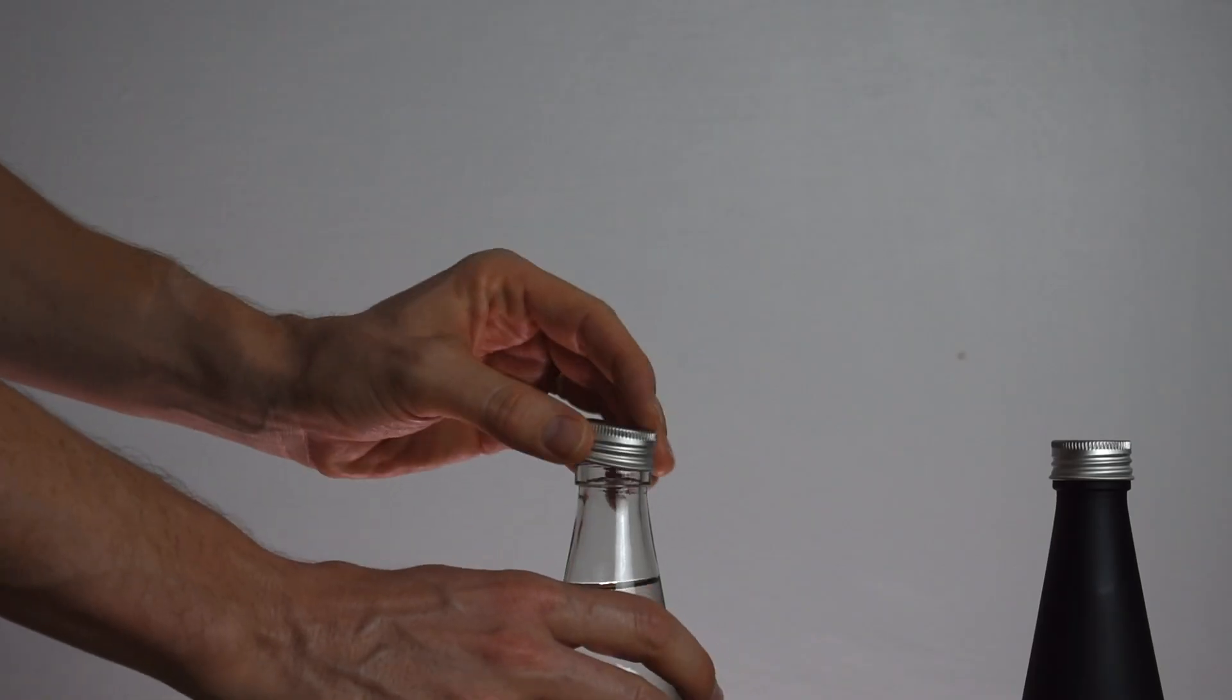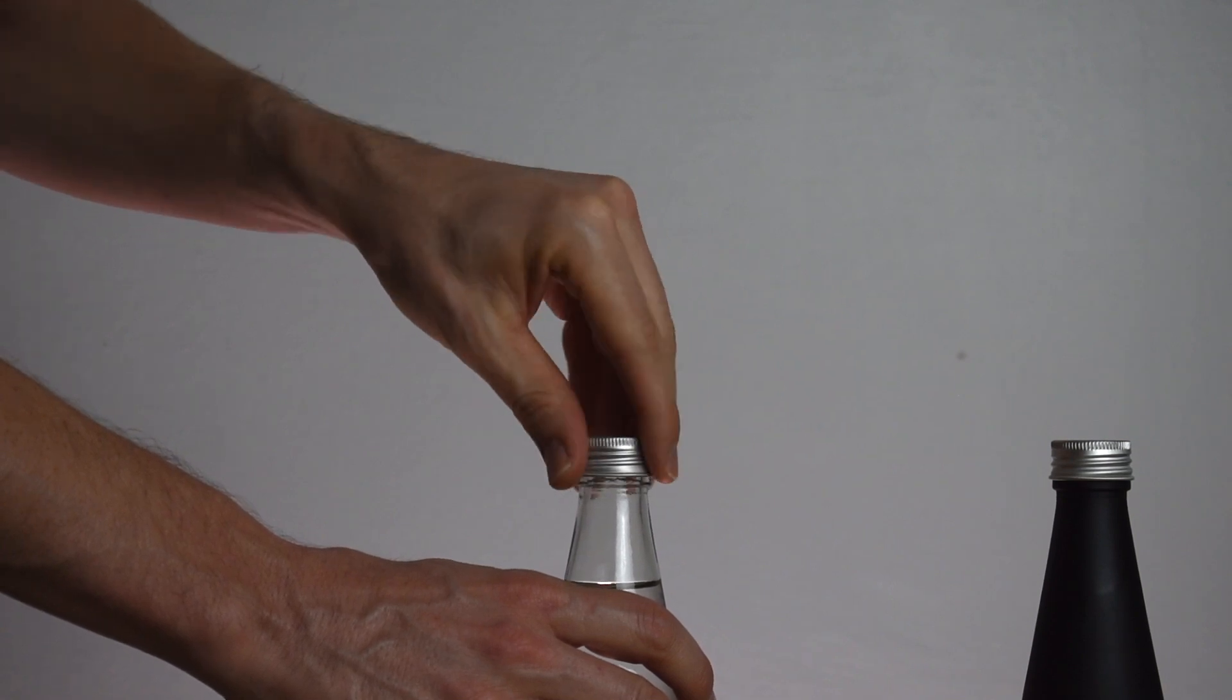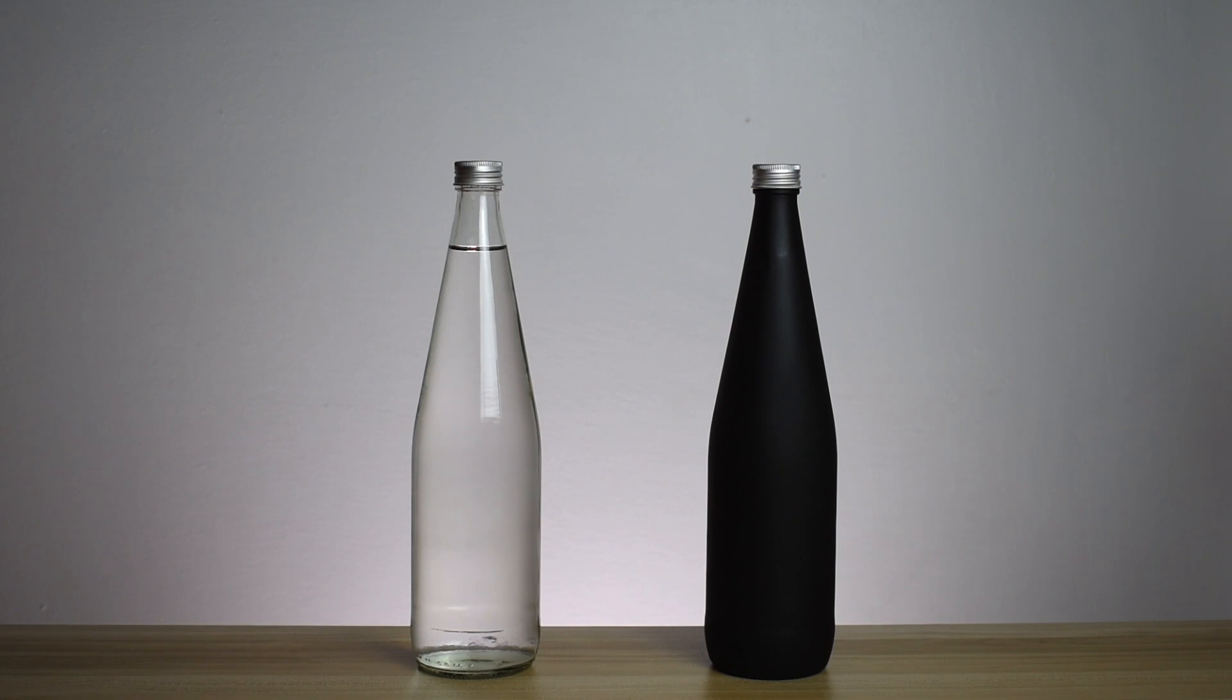Next, seal them airtight so that no gases can enter or exit the bottles. This means that any changes in gas levels are only the result of photosynthesis and respiration within the bottles and not from gases entering or exiting the systems.